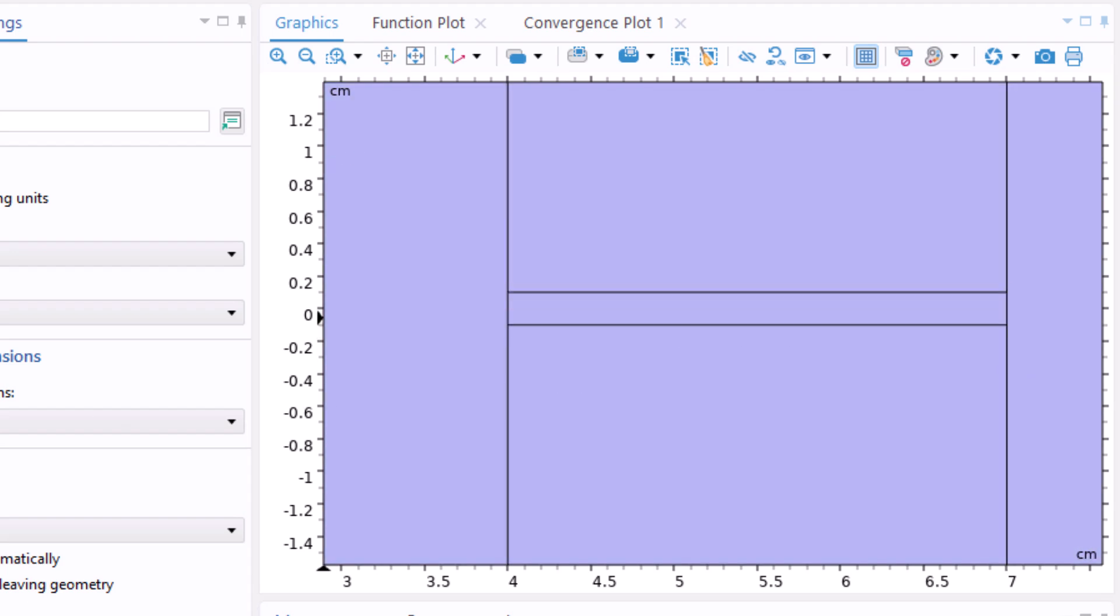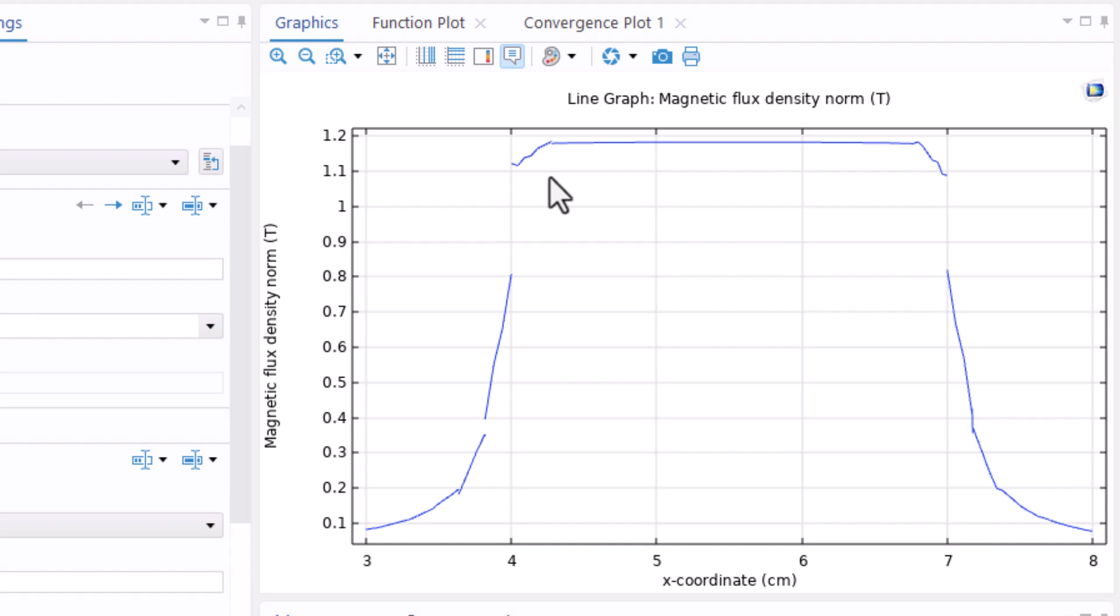If we return to our geometry we can see that from x equal 4 to x equal 7 represents the air gap. The magnetic flux density remains nearly constant in the central region but drops near the edges, indicating fringing. We also have magnetic flux density outside the air gap area.